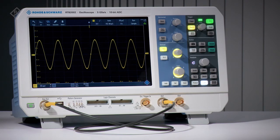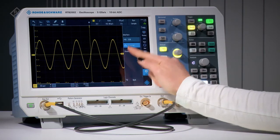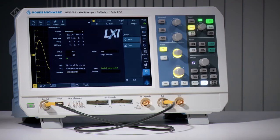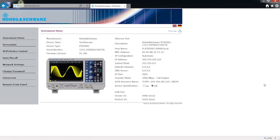Rohde & Schwarz RTB 2000, RTM 3000 and RTA 4000 Series Oscilloscopes include a built-in web interface. Simply type in the IP address of your scope and connect. Dedicated functions simplify tasks like getting screenshots and sending remote commands.